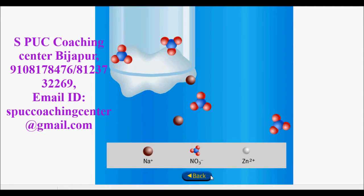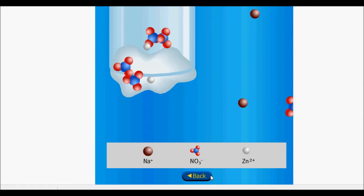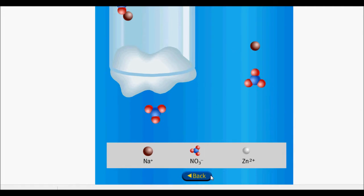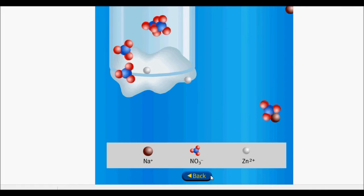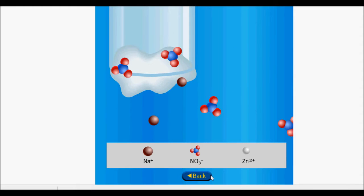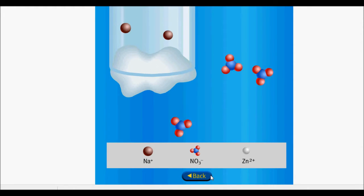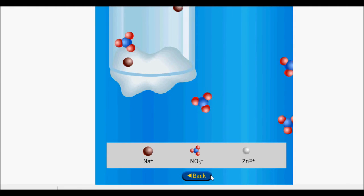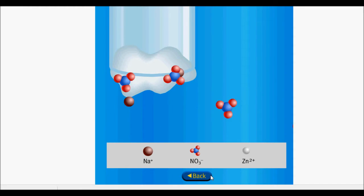The salt bridge contains sodium nitrate, which exists as sodium ions and nitrate ions in solution. As copper ions in solution are reduced to copper metal, positive ions are removed and a negative charge builds up in the solution. If this negative charge were not counterbalanced, the galvanic cell would cease to function in a short period of time. The positive sodium and positive zinc two-plus ions flow into the solution containing the copper electrode, and the negative nitrate ions move in the opposite direction to balance the charge. For this cell, sodium ions are chosen because they do not react with other ions in solution or with the electrode.